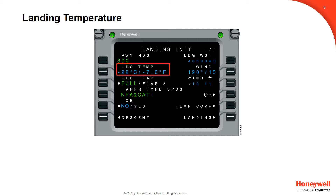The landing temperature is displayed in both Celsius and Fahrenheit at line 2 left and should be entered after the pilot listens to ATIS or gets the landing field temperature value. Pilot entry of Fahrenheit, preceded by a backslash, is permitted. Enter only Celsius or Fahrenheit, but not both.